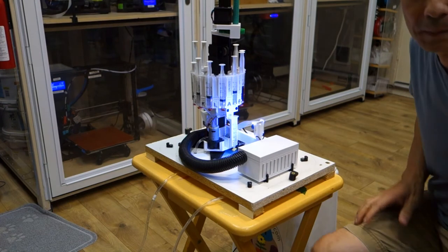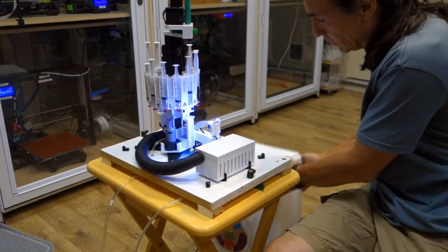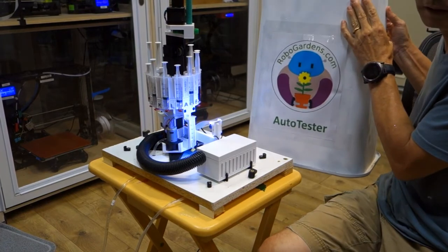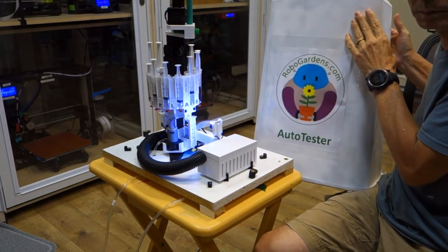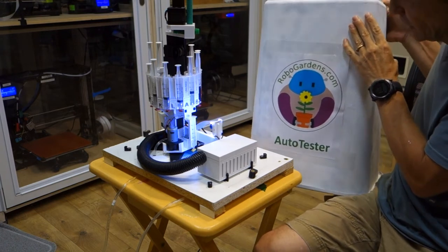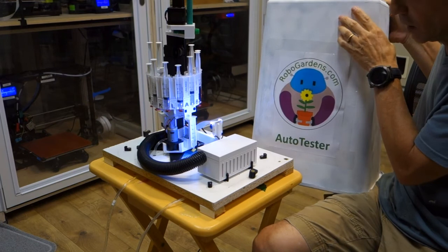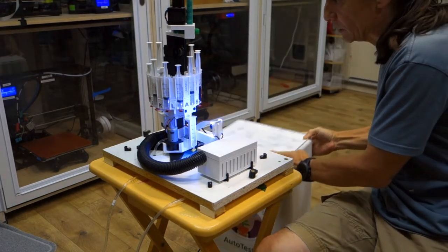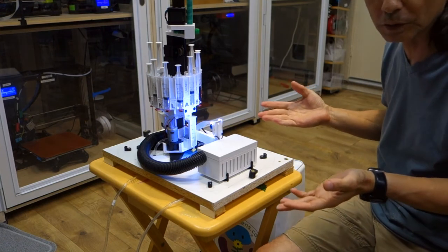So again, my name is Stephen Hayes from robogardens.com. If you have any questions at all, please send me an email. The email is info at robogardens.com. Again, I'm going to release all of this as open source to the community.